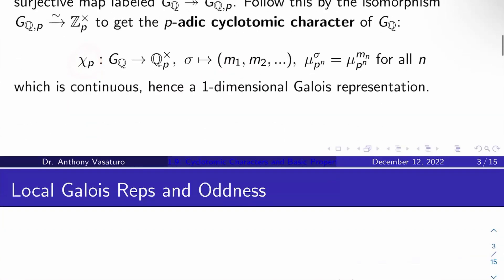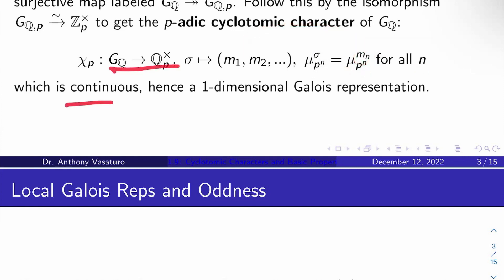What does chi_P do? It sends sigma in the Galois group to some sequence of elements in Z_P×, say M_1, M_2, and so on. These M_Ns are defined as follows: if you act on a primitive P to the Nth root of unity mu_{P^N} by sigma in G_Q, you get mu_{P^N} to the power M_N, for all N. This is easily seen to be a continuous group homomorphism, so it's definitely a one-dimensional Galois representation.